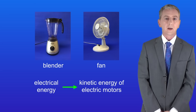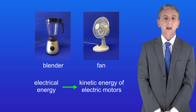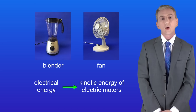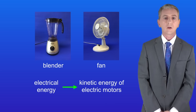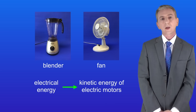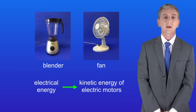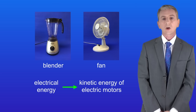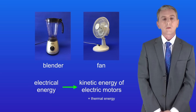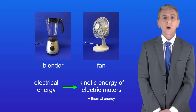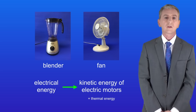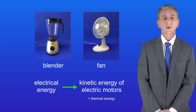If we look at the blender and the fan, we can see that these are powered by electrical energy. In both cases the electrical energy is transferred into the kinetic energy of electric motors, because the main purpose of both appliances is movement. The blender moves to mix the food and the fan moves to create air currents. There will also be a small amount of thermal energy generated due to friction in the motors, but we're going to ignore that — it's not our intended energy transfer.